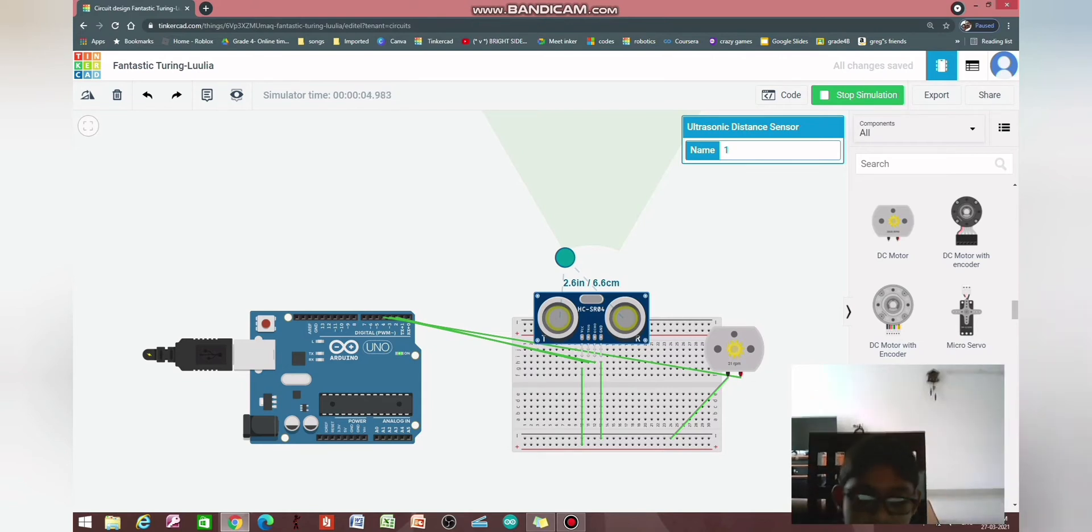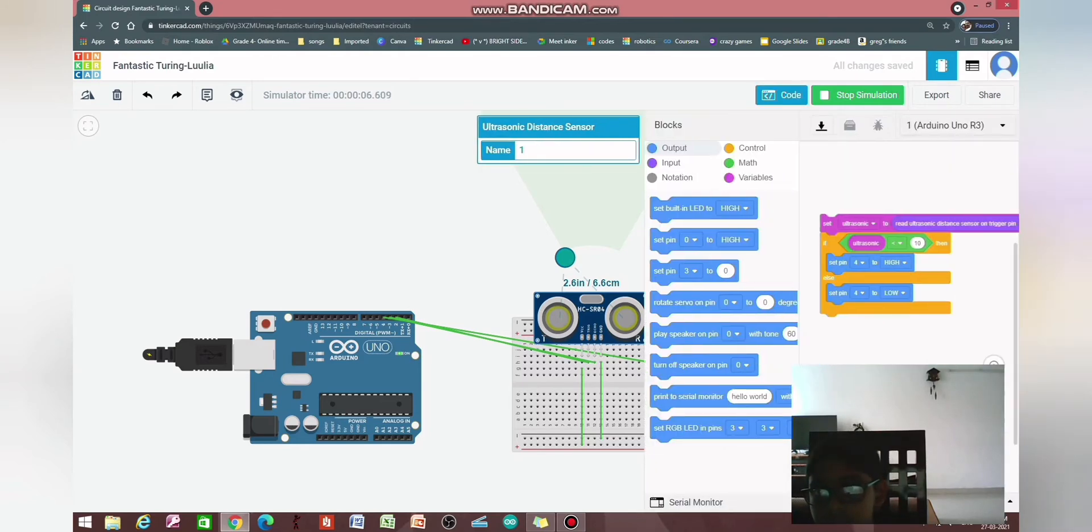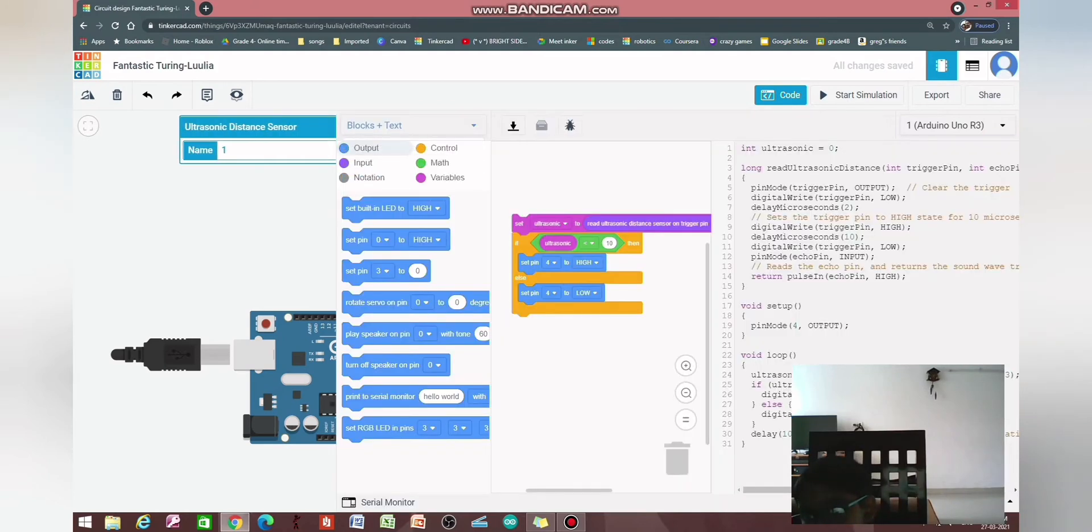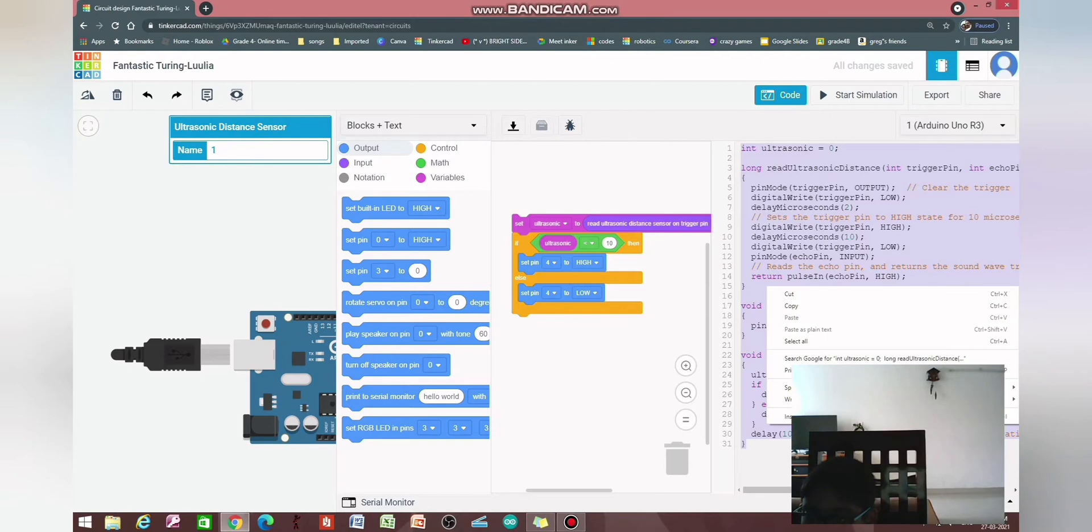Let's connect the Arduino to the PC. So then, code. Stop simulation, by the way. And then, as you can see, this blocks, it should become blocks and text. So, now you get a whole set of code. Copy it.